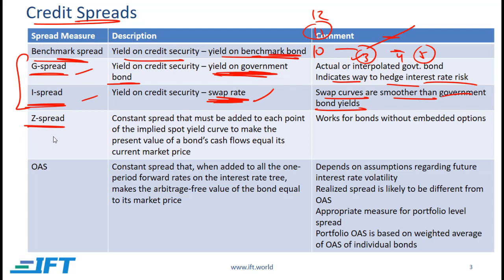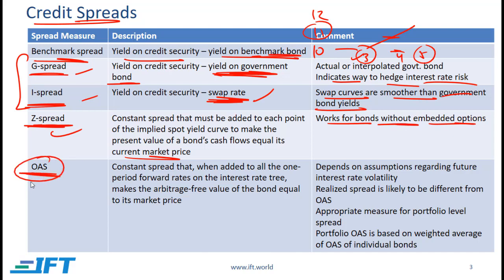Next we come to the Z spread. This is the constant spread that must be added to each point of the implied spot yield curve to make the present value of a bond's cash flows equal its current market price. This measure works for bonds without embedded options. If we do have embedded options, the Z spread does not work — we should use the option adjusted spread (OAS). The OAS is the constant spread that, when added to all the one-period forward rates on the interest rate tree, makes the arbitrage-free value of the bond equal to its market price.